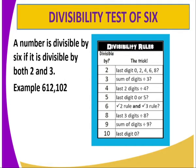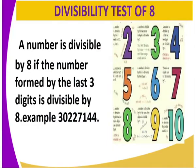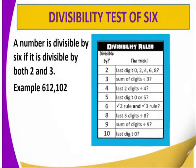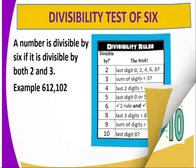Let us get another number like 102. Is it divisible by 2? Yes, because the last digit is an even number. Let us try to look whether it is divisible by 3. We get 1 plus 0 plus 2 to get 3. Is 3 divisible by 3? Yes. So that is to mean 102 is divisible by 6, because it is divisible by both 2 and 3.